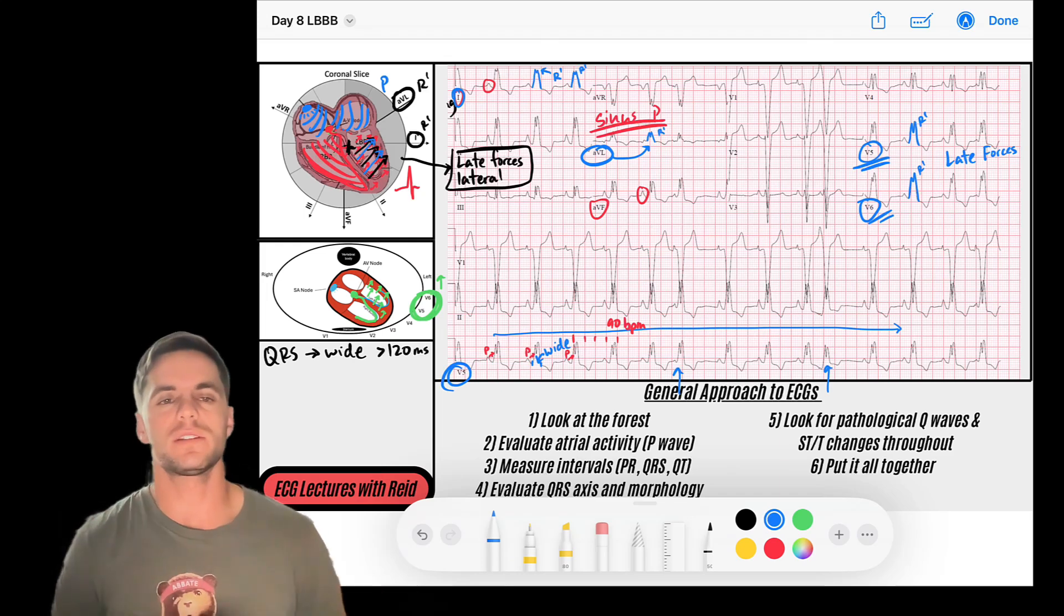So that's a really important wave to look for. It doesn't always have to be present in leads 1, AVL, V5, and V6. Those are our lateral leads, but it should be present in at least two of them. That's usually the case.